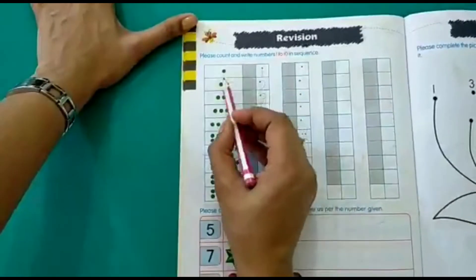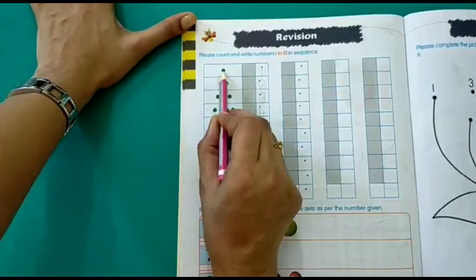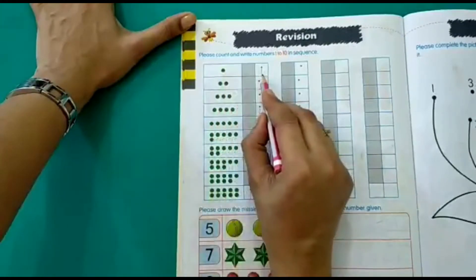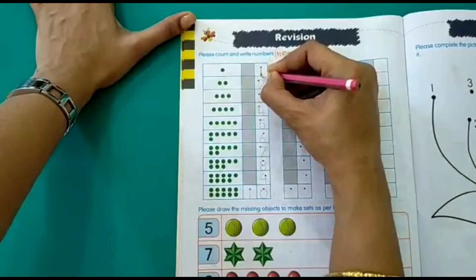As you can see we have beads here. We have small circles here. In the first box we have 1 circle. So that is number 1. So you can write on the dotted lines, you can write number 1.